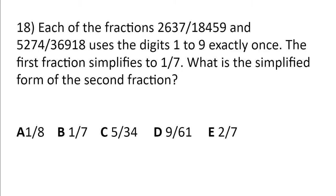Each of the fractions 2,637 divided by 18,459 and 5,274 divided by 36,918 uses the digits 1 to 9 exactly once. The first fraction simplifies to 1 over 7. What is the simplified form of the second fraction?